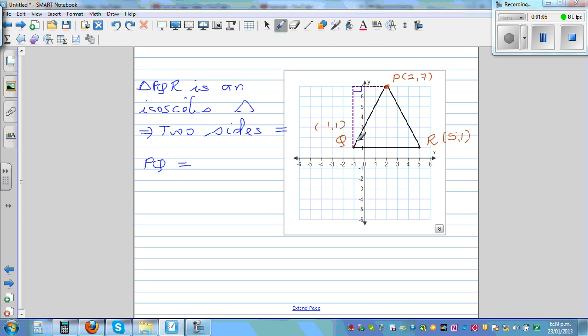So what's this distance? Here you're at 1 and you're going up to 7, so this distance is 6. And what's this distance? You're at negative 1, you're going to 2. You can count the squares: 1, 2, 3.